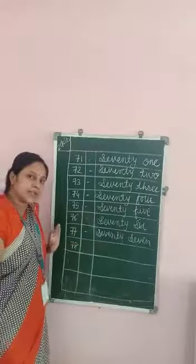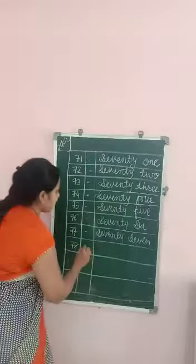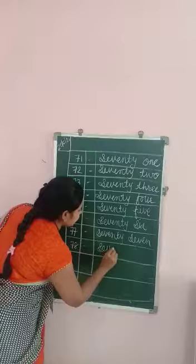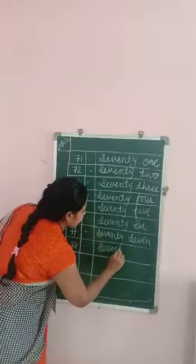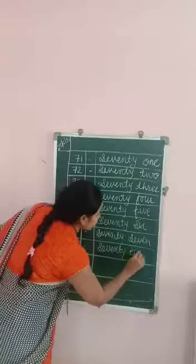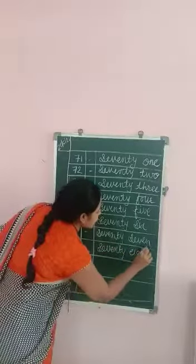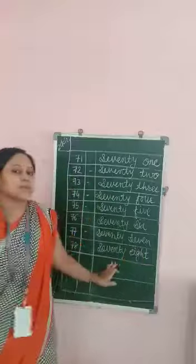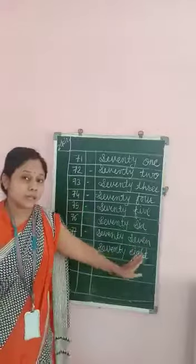7, 78. S, E, V, E, N, T, Y — 70. E, I, G, H, T — 78.